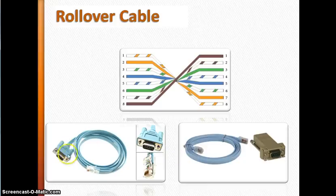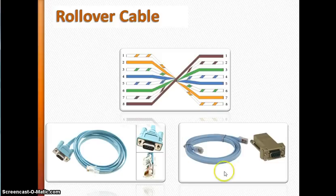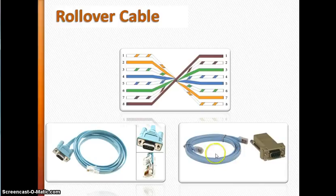There are two varieties of this rollover cable. The first one has the DB9 connector built in — that end goes to the PC, and the other RJ45 end goes to the console port of the switch.